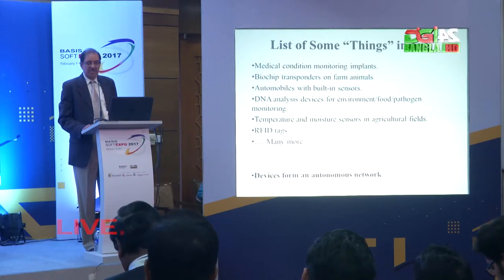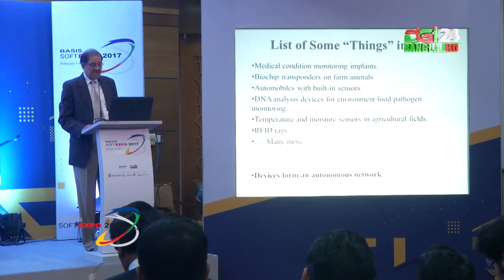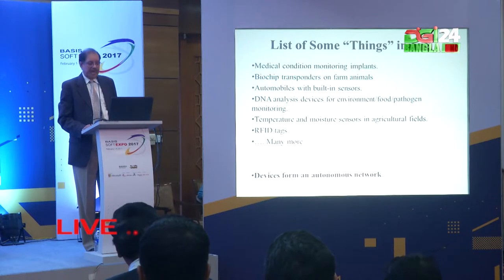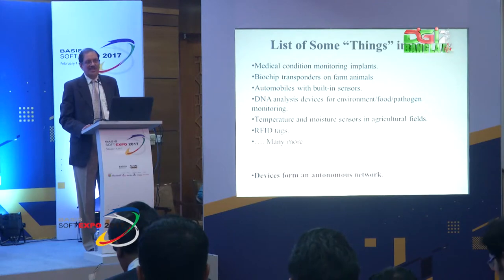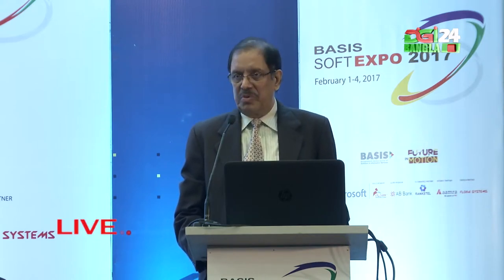Some things that are part of the Internet of Things include medical condition monitoring plants for healthcare, bio-chip transponders on farm animals, automobiles with built-in sensors, DNA analysis devices for environmental and food pathogen monitoring, temperature and moisture sensors in agriculture fields, RFID tags, and many more. These devices form autonomous networks — sometimes wireless, sometimes wired, sometimes connected through the Internet cloud. Application areas include building and home automation, manufacturing, medical and healthcare, agriculture, media, environmental monitoring, infrastructure monitoring, energy monitoring, transportation, and caring for elderly people.